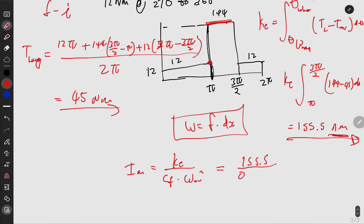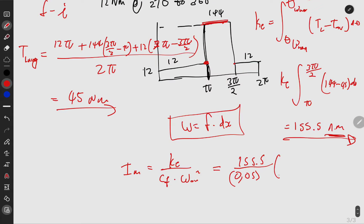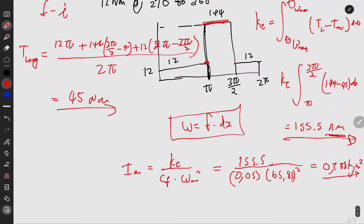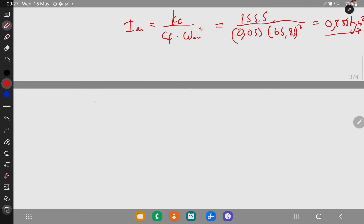KE is 155.5, cf is the coefficient of fluctuation 0.05, and omega is 62.83. I plug it in—omega is squared in the bottom. After proper computations, I'll get the moment of inertia in kg⋅m².